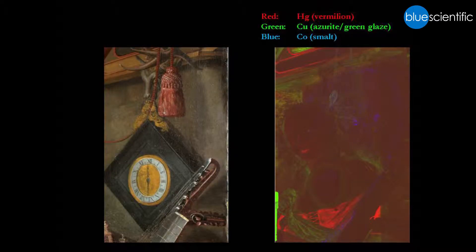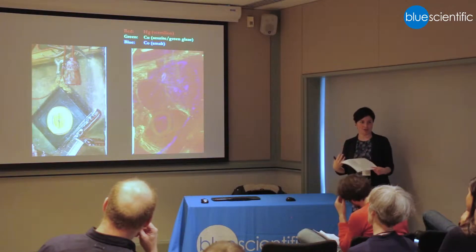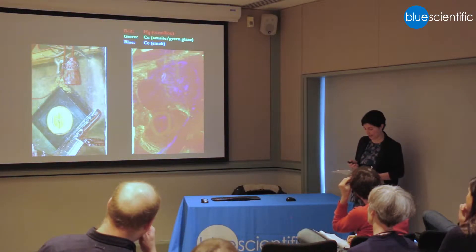Going back to the overpainted area and combining the maps for mercury, copper, and cobalt, you can start to see that the woman probably had a red corset, bright red lips, blue ribbons or feathers in her hair, and a green or blue copper-based sash. So we can start to think about how she might have been dressed and what she might have looked like.